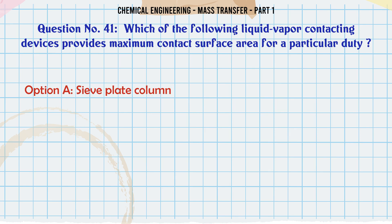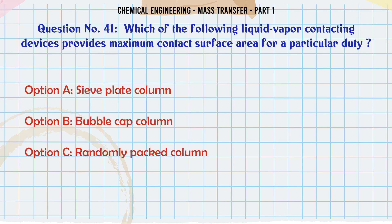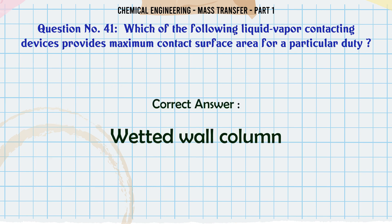Which contacting device provides maximum contact surface area for a particular duty? A. Sieve plate column. B. Bubble cap column. C. Randomly packed column. D. Wetted wall column. The correct answer is Wetted wall column.